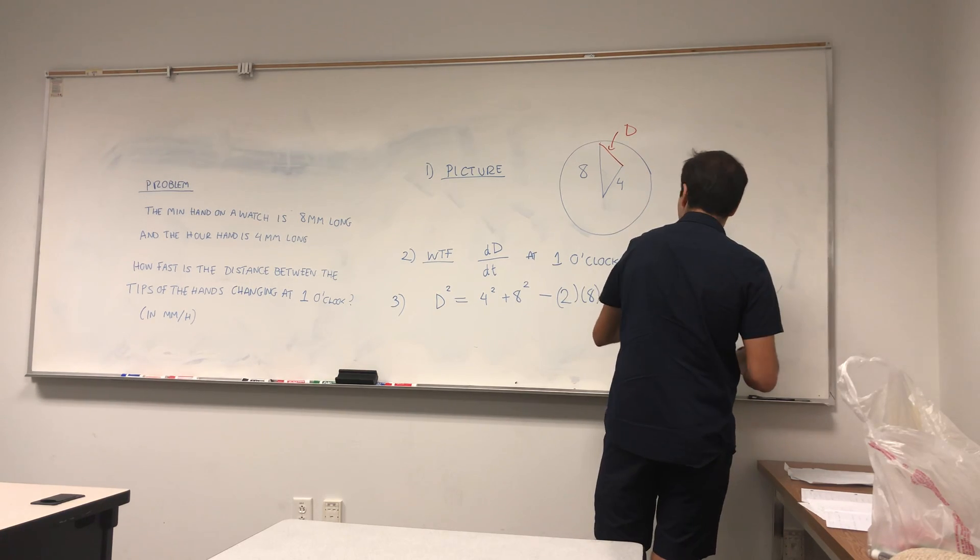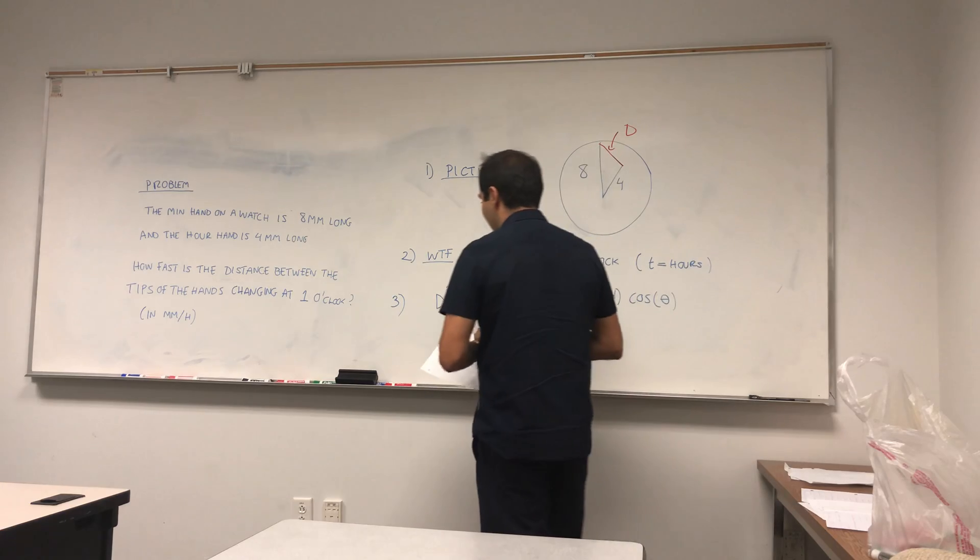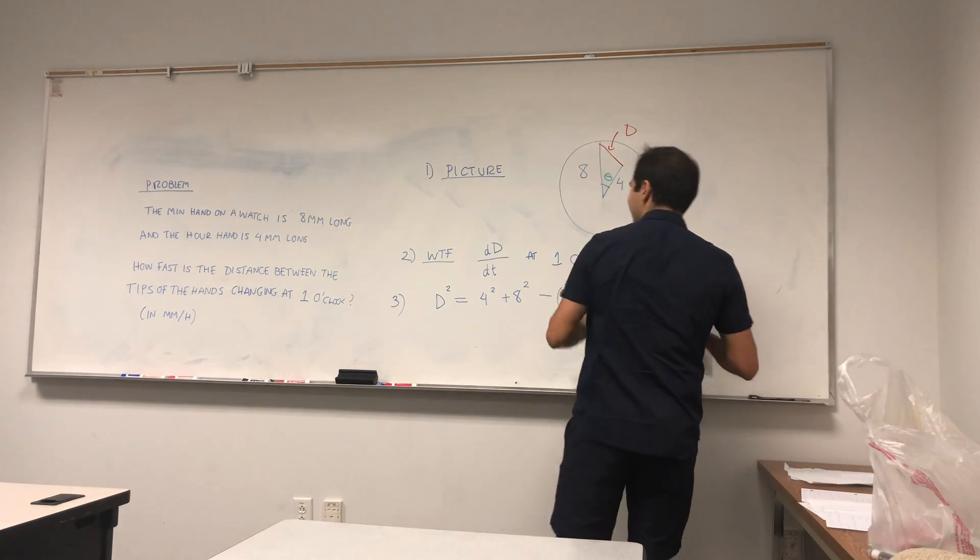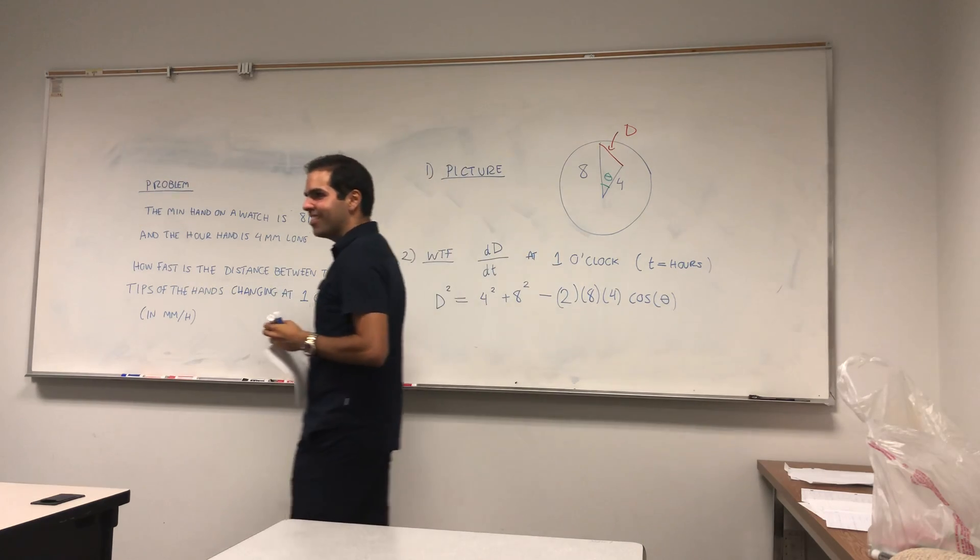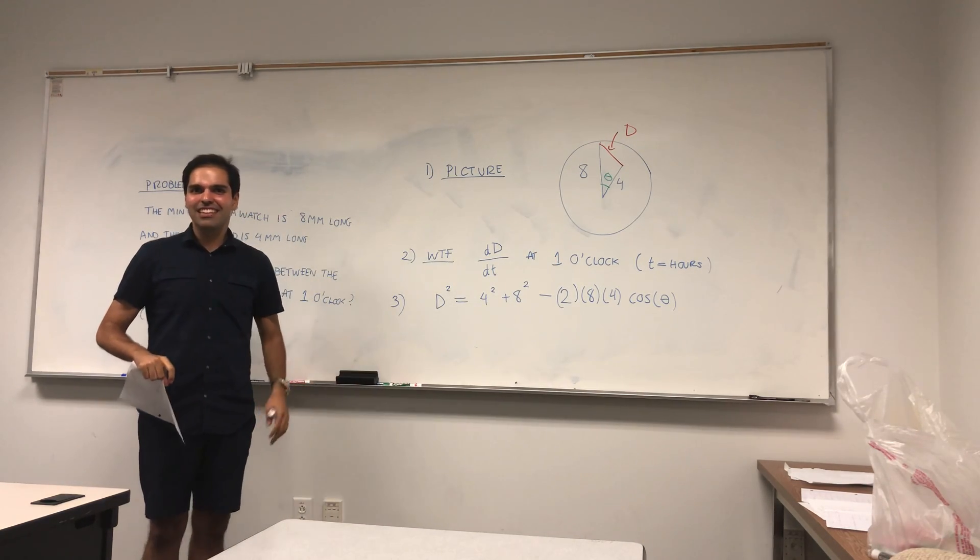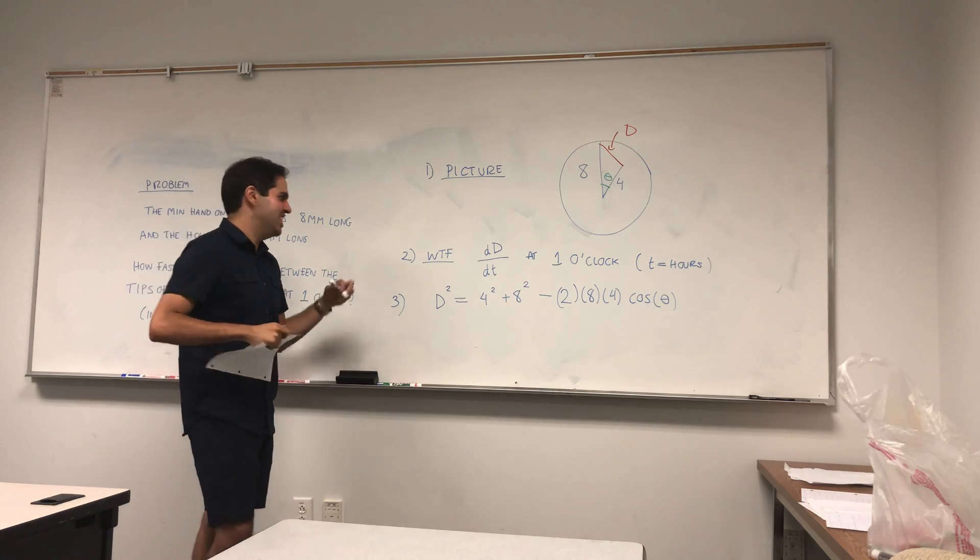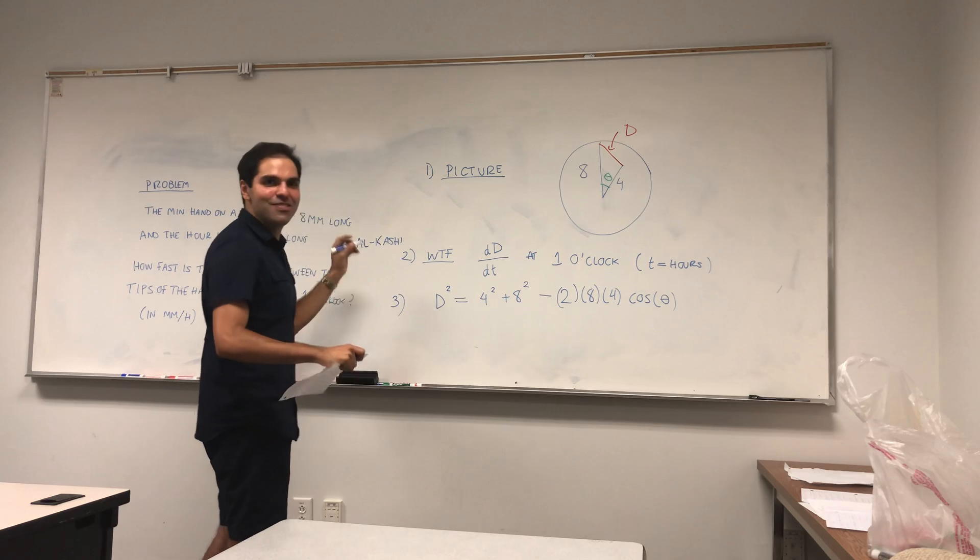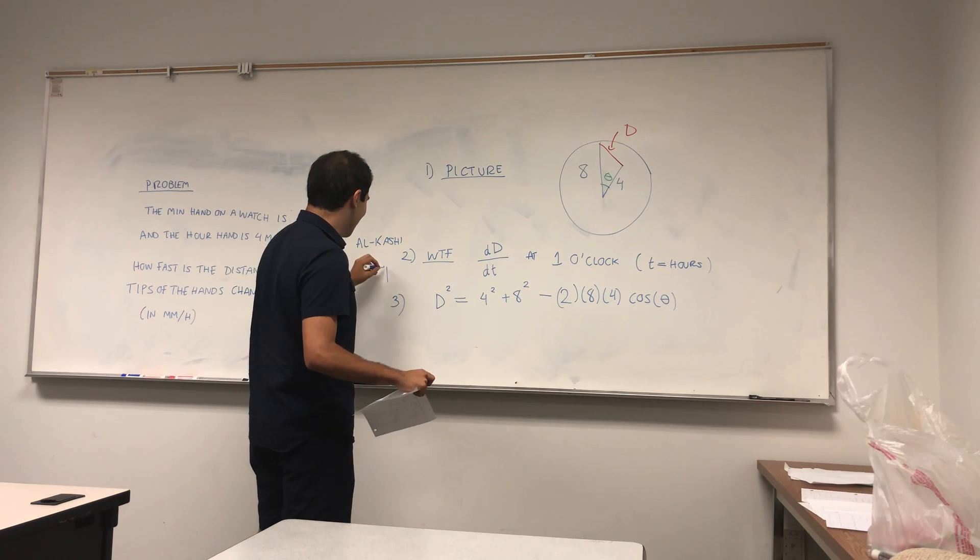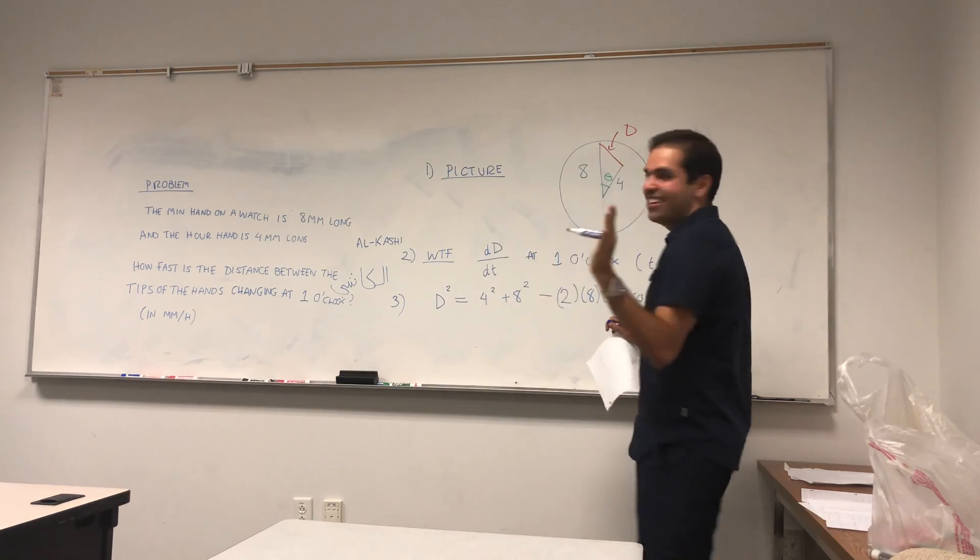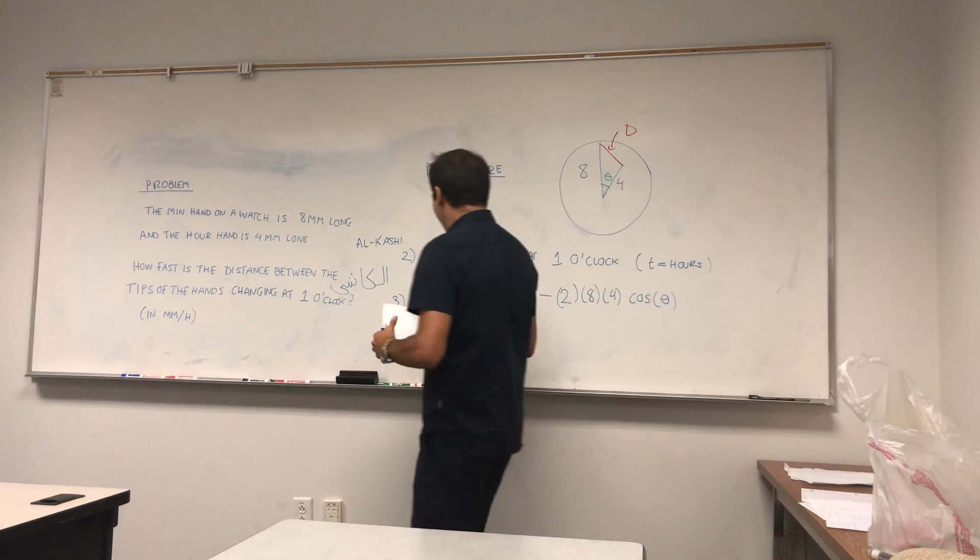Where theta is the angle between the two. And here in America it's called the law of cosines. In France it has a cooler name, it's the formula of al-Kashi. So Arabic al-Kashi, let me write it in Arabic if I remember.